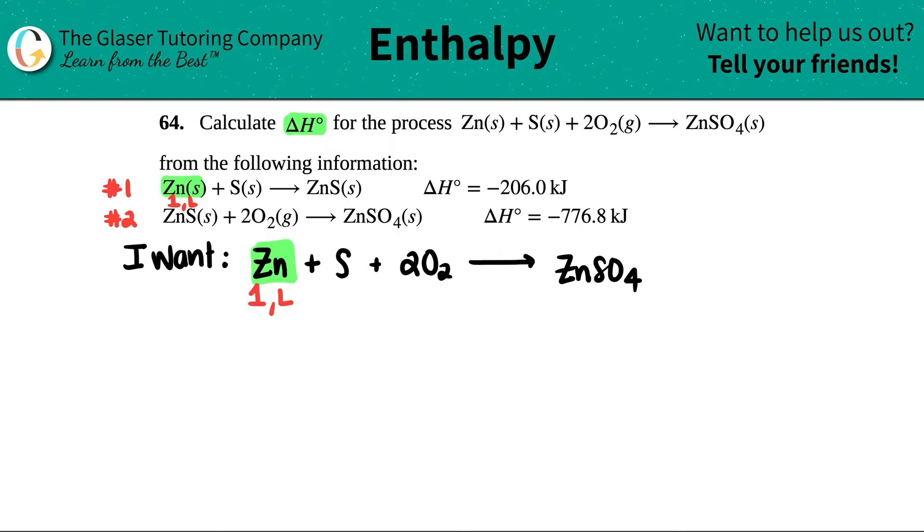So all we have to do is rewrite equation number one. So I'm just going to say Zn plus S yields Zn S, and since I didn't do anything to this equation, I don't have to do anything with the delta H, but the delta H has to come along for the ride. We're done with the zinc.